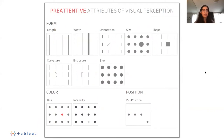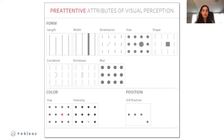Pre-attentive attributes of visual perception include not only color but also length, width, orientation, size or shape, curvature, and the enclosure or blur of a line or dot. When we see a shape on the screen that stands out — if it's different, bigger, oriented slightly differently, or uses color — it registers in our brain much more readily. When designing data visualizations, we want to take advantage of these pre-attentive attributes to call important data out to our users.